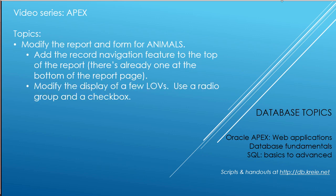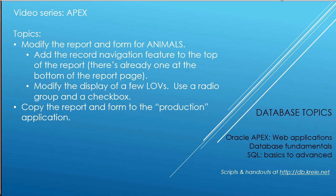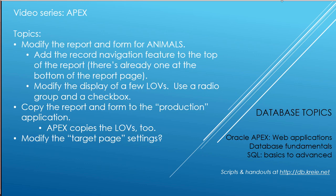We'll look at modifying the form for animals. We created LOVs, List of Values. Now we'll change the display for a couple of those to Radio Group and Checkbox, so you can see some of the display options that you have with LOVs. Then we're going to copy that report and form to the production application. Apex very nicely offers us the opportunity to copy the LOVs. The LOVs from the development application are not in the production application right now, but we can copy those over. I'll probably have to modify the target page settings because of conflicts in page numbers.